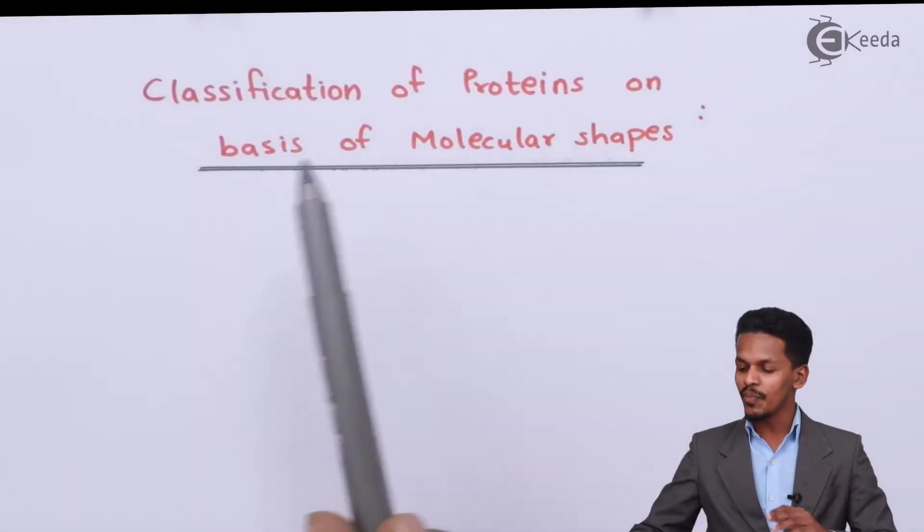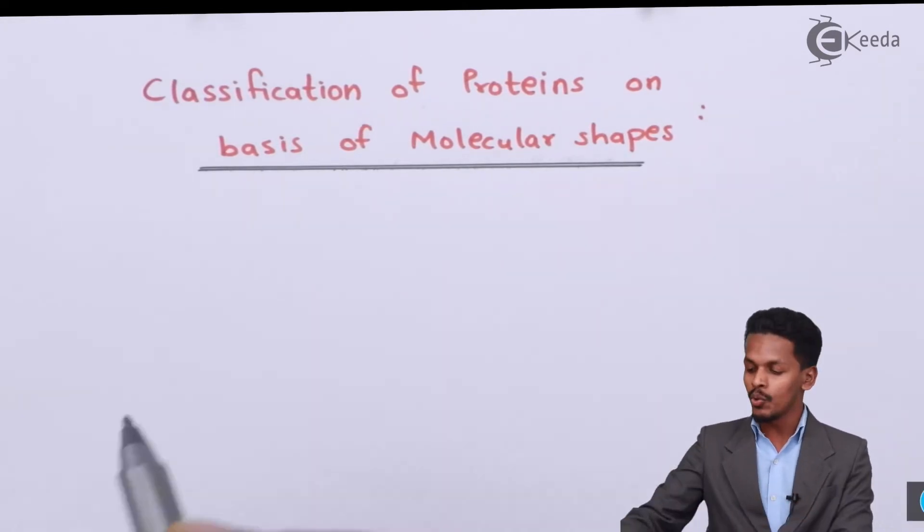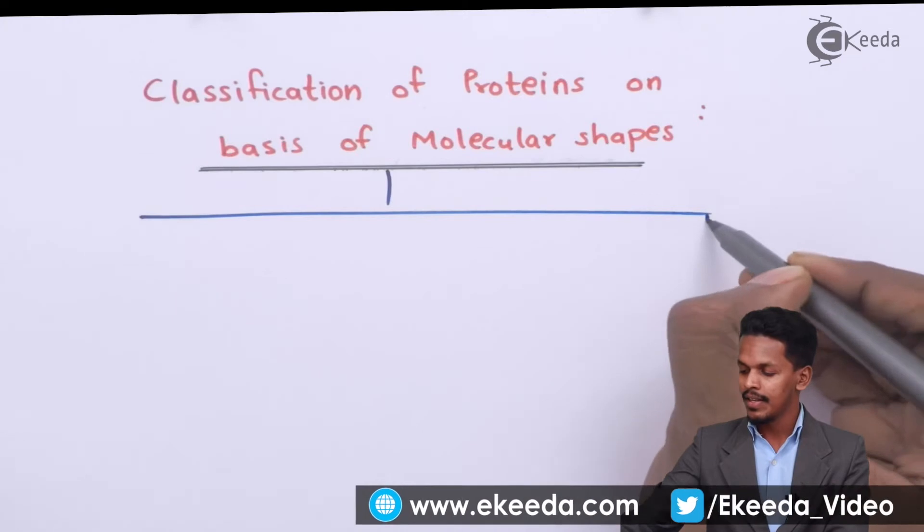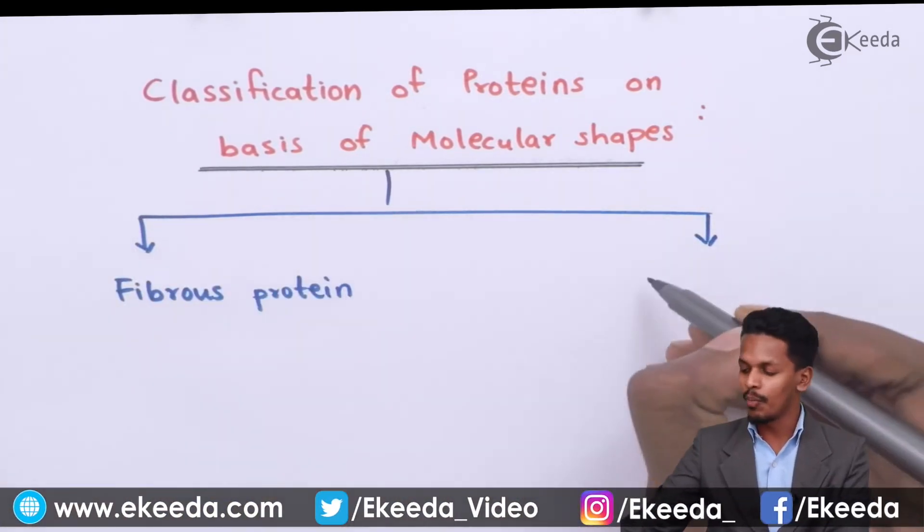Talking about the classification of proteins on basis of molecular shape, proteins are basically divided into two types: fibrous protein and globular protein.